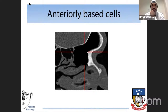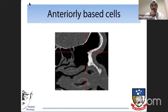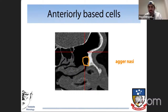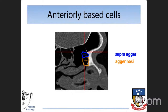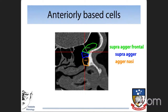Anteriorly-based cells are associated with the frontal process of the maxilla. Starting with the agger nasi cell, which is the first cell encountered as we enter the frontal recess through the axilla. Any cell sitting above the agger nasi cell is called the supra-agger nasi cell, which is associated with the frontal ostium but does not go through it into the frontal sinus. Any cell that does go through the frontal sinus is called the supra-agger frontal cell. All of these cells tend to push the drainage pathway posteriorly.